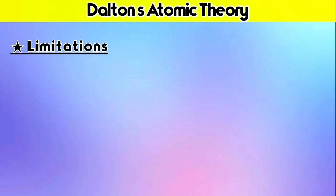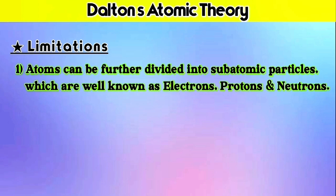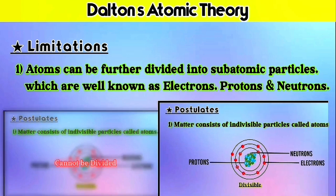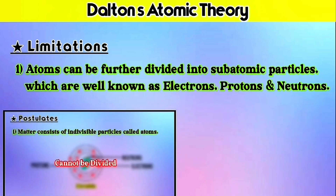So now all the postulates are clear. Let's move to the limitations of Dalton's atomic theory. Dalton's atomic theory was one of the vital contributions in discovering the nature of matter, but it also has some limitations or drawbacks. The first limitation is: atoms can be further divided into subatomic particles — electrons, protons, and neutrons. For many years, Dalton's statement that atoms are indivisible was accepted by the majority of scientists, but later it was proved that atoms can be divided into subatomic particles. This made the first postulate a major drawback of the theory.